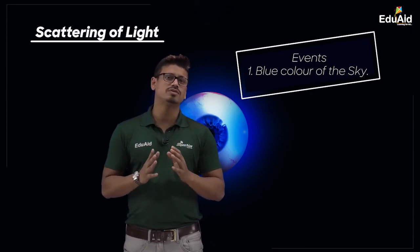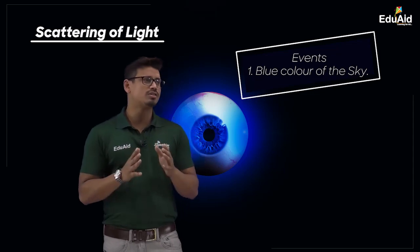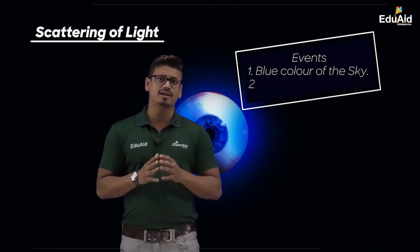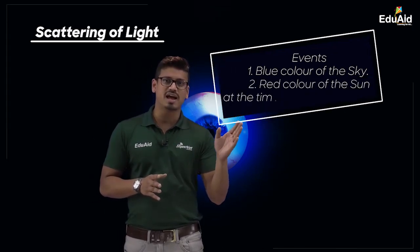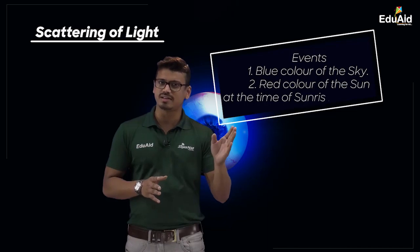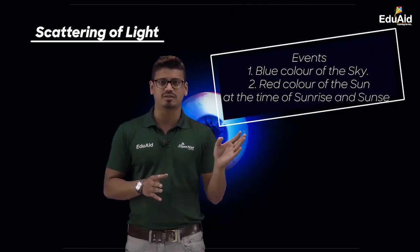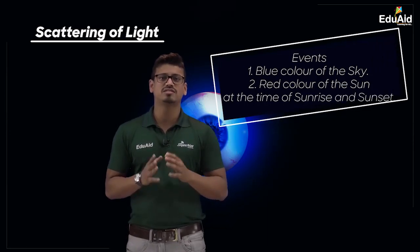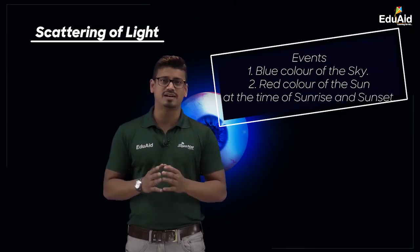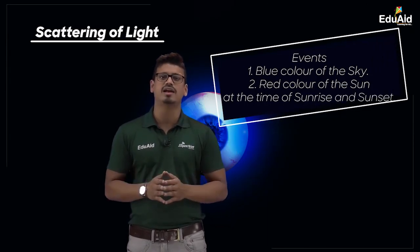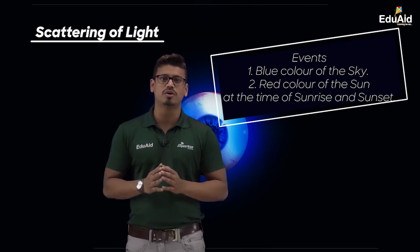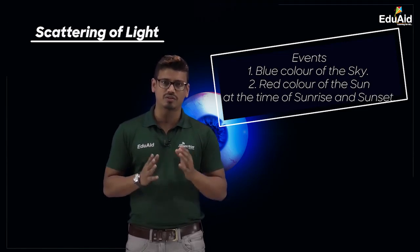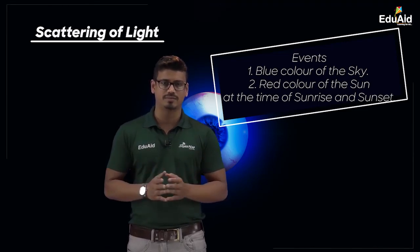We also studied how scattering of light is related to the appearance of the sun at the time of sunrise and sunset. The sun appears red at the time of sunrise and sunset, which is also because of scattering of white light.